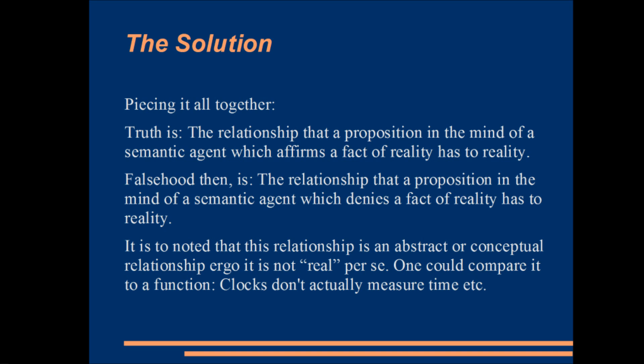Continuing to relate truth to correspondence with reality, we can make some conclusions. Truth is the relationship that a proposition in the mind of a semantic agent which affirms a fact of reality has to reality. Falsehood then is the relationship that a proposition in the mind of a semantic agent which denies a fact of reality has to reality. The observant ones will note that truth and falsehood according to these definitions aren't incompatible — statements can be made which both affirm and deny a fact of reality. This is not a problem for the law of the excluded middle, since statements which are both true and not true still aren't permitted. It is to be noted that this relationship is an abstract or conceptual relationship; one could compare it to a function — clocks don't actually measure time, but rather are used to measure time.